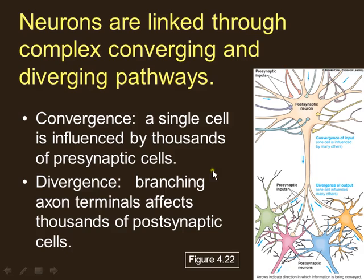The other thing neurons do is diverge — one signal divides and goes to many areas. A signal going into the brain might diverge to the temporal lobe, frontal lobe, and parietal lobe, helping interpret the signal differently. One pathway might signal pain while another gives an emotional feeling or connection. Converging means signals come together; diverging means they divide and go apart.